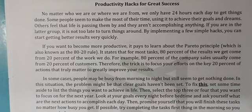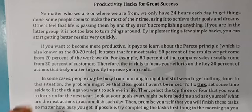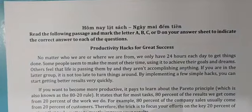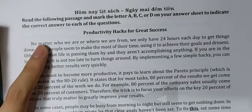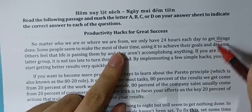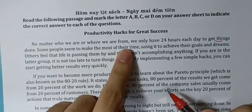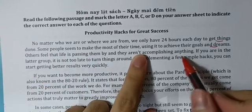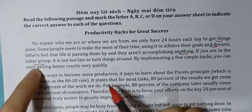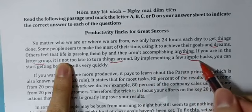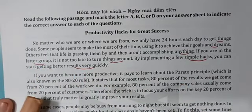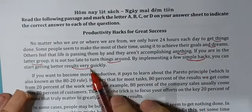Bây giờ chuyển sang bài số 2, cũng không quá khó. Bài đọc tuần này rất cơ bản. Tiêu đề là 'Productivity Hacks for Success' - tính hiệu quả dẫn đến thành công. 'Hack for' ở đây nghĩa là dẫn đến. Đoạn 1: Dù cho bạn là ai, dù đến từ nơi nào, chúng ta chỉ có 24 giờ mỗi ngày. Một vài người tận dụng tốt thời gian để đạt được mục tiêu, những người khác cảm thấy cuộc sống trôi qua vô nghĩa. Hãy thực hiện những simple hacks dưới đây để có kết quả tốt hơn nhanh chóng.